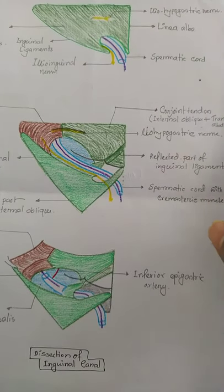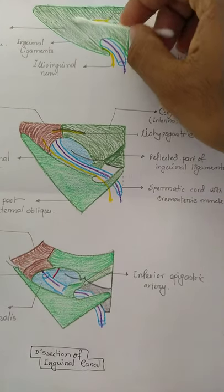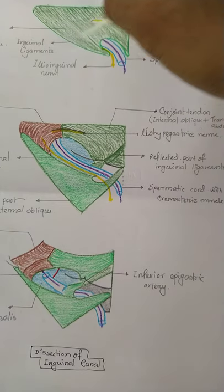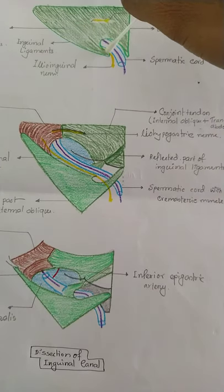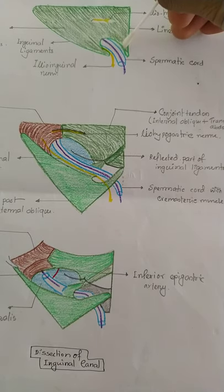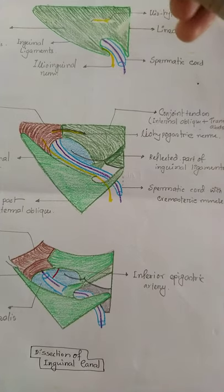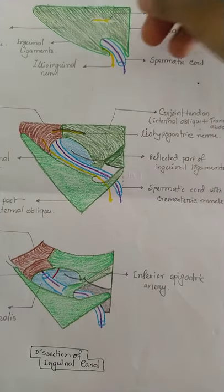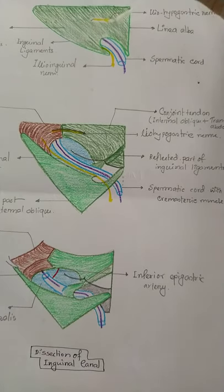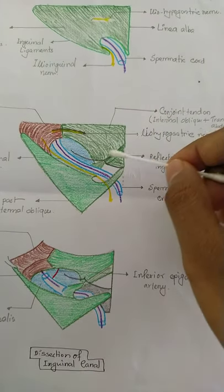Looking at the diagrammatic pictures of the boundary of the inguinal ligament and inguinal canal, we can see the aponeurosis of the external oblique, which solely forms the superficial inguinal ring. The superficial inguinal ring lies medial to the plane and lateral to the symphysis pubis. The superficial inguinal ring is solely formed by the external oblique aponeurosis.